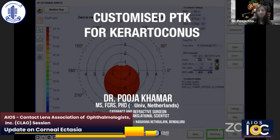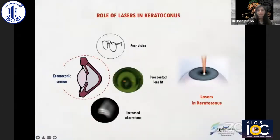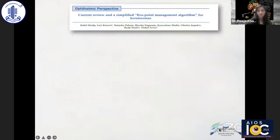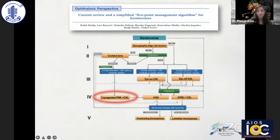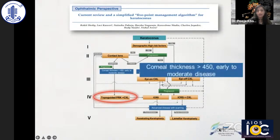I have no financial interests in the technique I'm going to be speaking about. The role of lasers in keratoconus is quite important nowadays — as my previous speakers have mentioned, it's not just about halting the progression. These keratoconic eyes have poor vision, many have poor contact lens fit, and they have increased abrasions. Our group has published a five-point nomogram which states that when doing laser-based cross-linking, corneal thickness should be more than 450 microns with moderate disease.